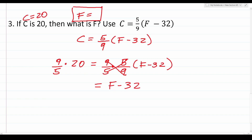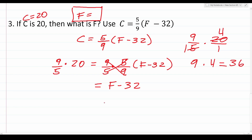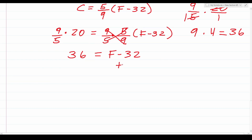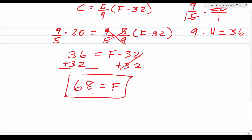Now we deal with 9 over 5 times 20 on the other side. Writing 20 over 1 and reducing: 5 goes into 5 once, and 5 goes into 20 four times. So this is 9 times 4, which equals 36. We have 36 equals F minus 32. Adding 32 to both sides: this cancels, leaving just F. 6 plus 2 is 8, and 3 plus 3 is 6. So F equals 68. If it's 20 degrees Celsius, that means it's 68 degrees Fahrenheit.